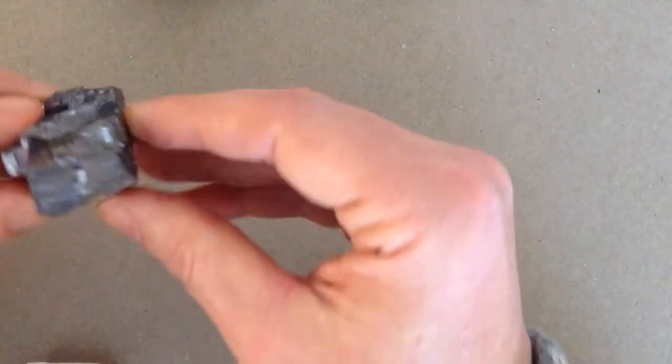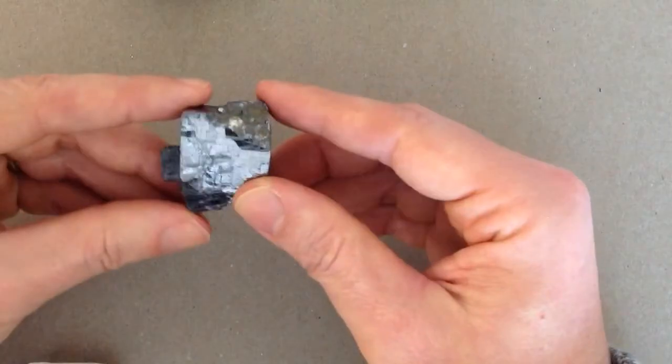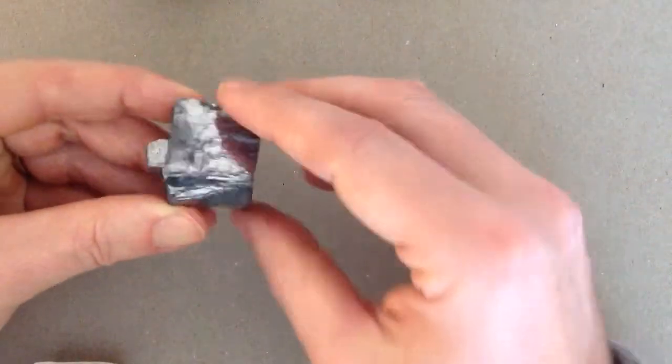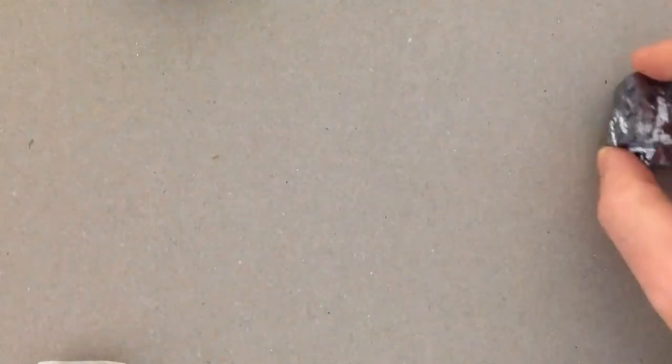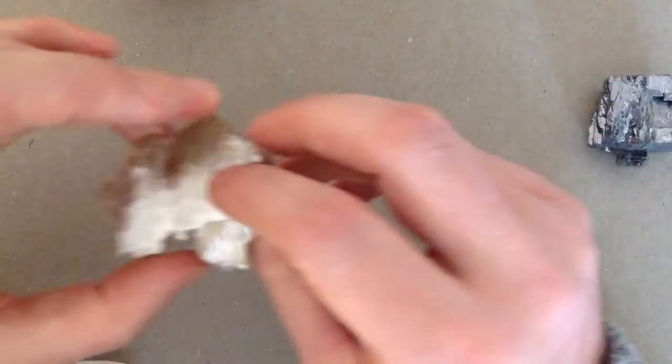So a mineral like calcite is going to exhibit cleavage. A mineral like galena is going to show almost a cubic shape to it. That is going to exhibit cleavage. Even a mineral like the micas, the biotite or the muscovite,